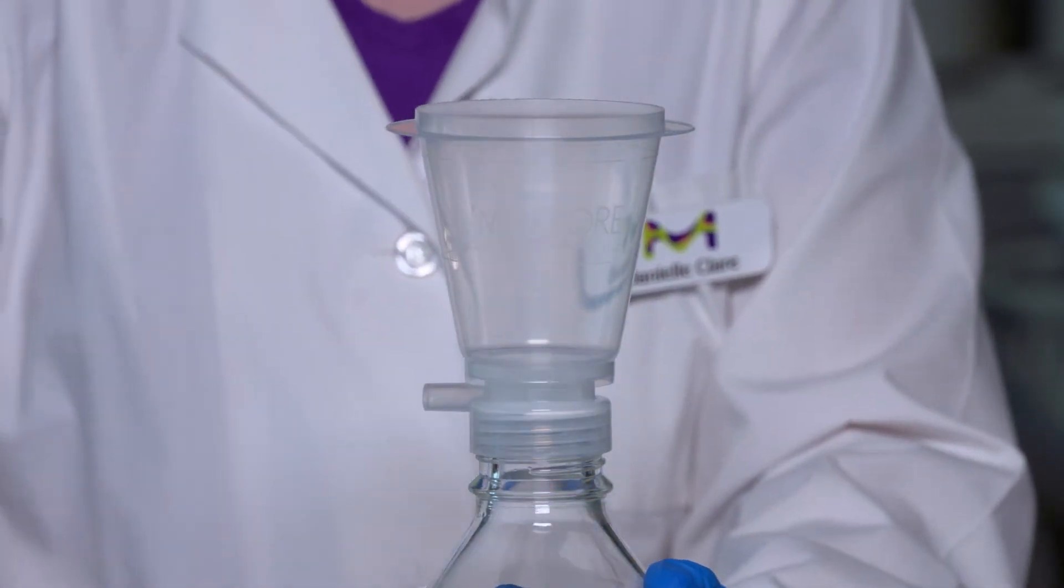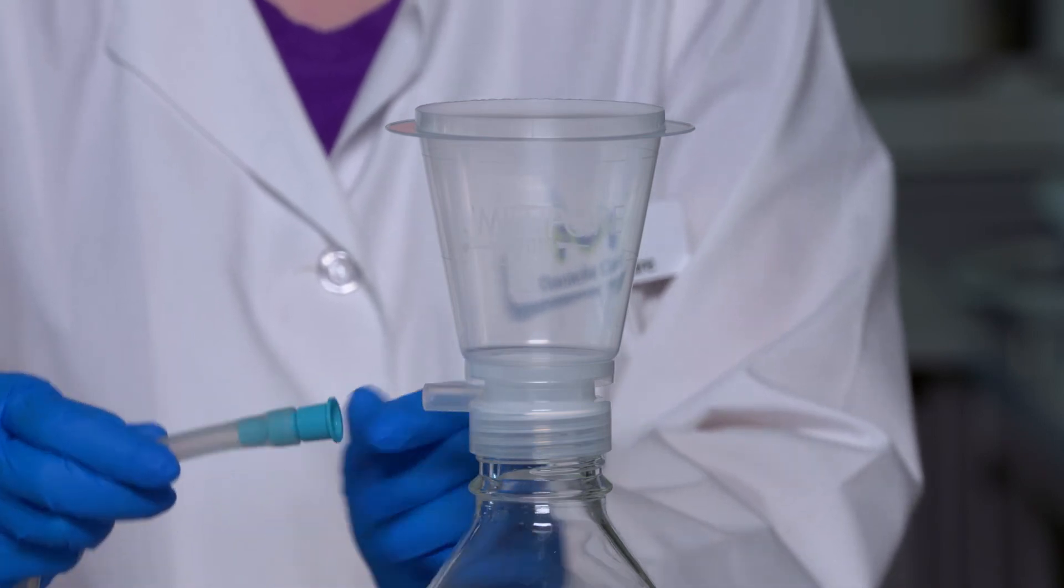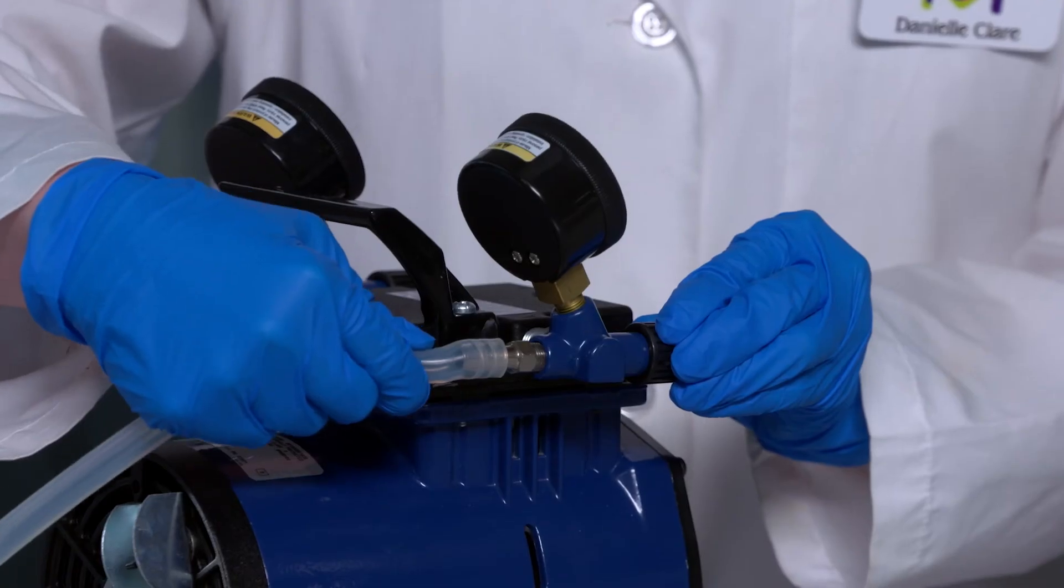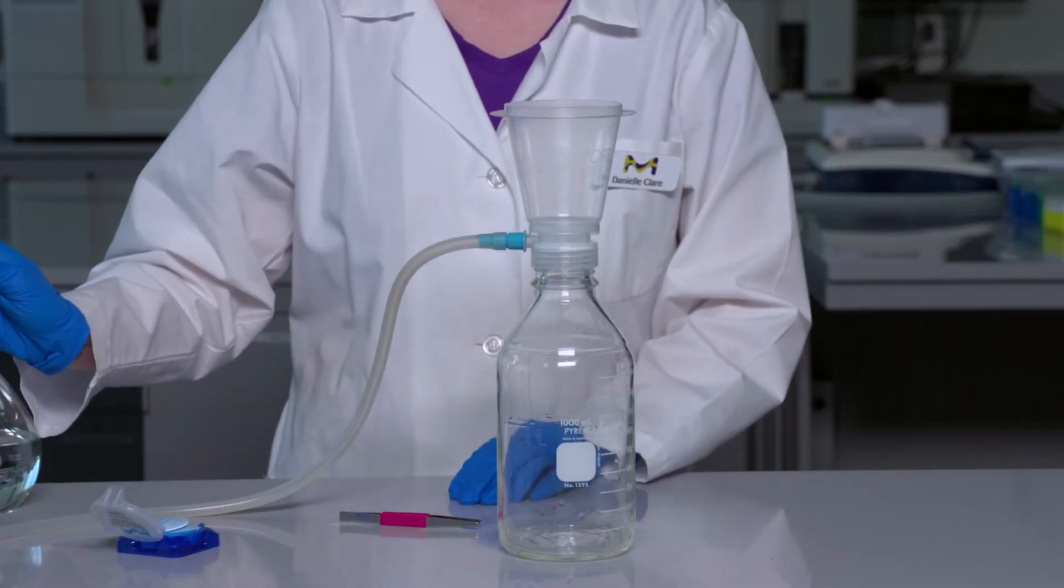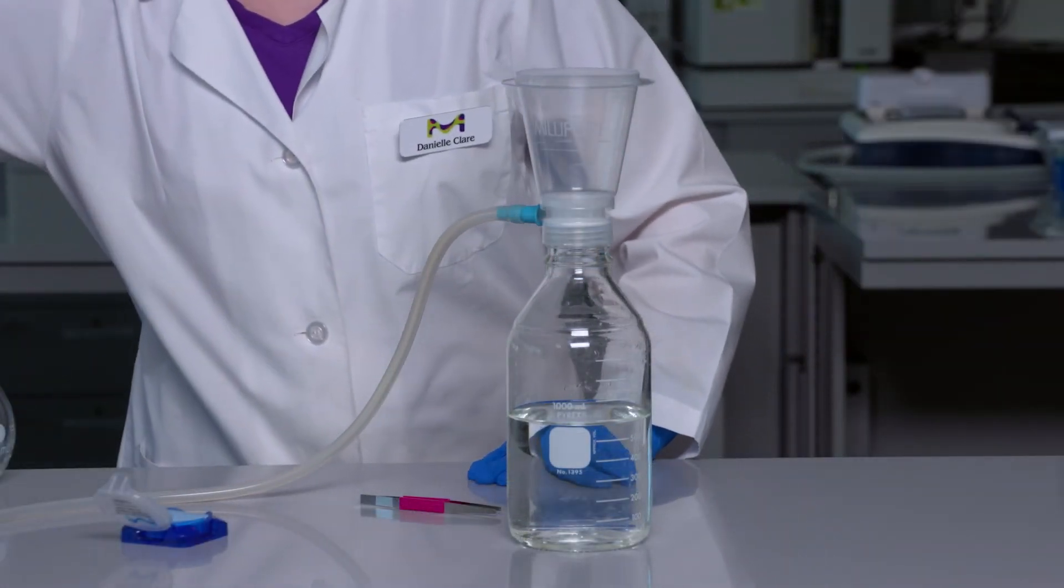Attach one of the included tube adapters to the vacuum port. Connect one end of the vacuum tubing to this adapter and the other end to your vacuum source. Pour your solution into the funnel and apply vacuum until filtration is complete. Turn off the vacuum and disassemble the setup.